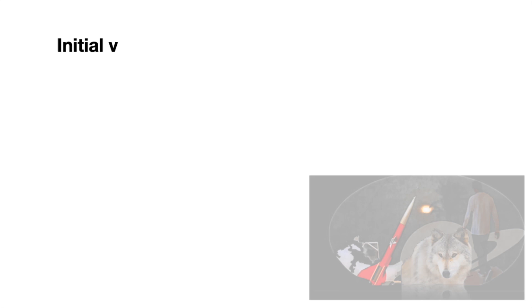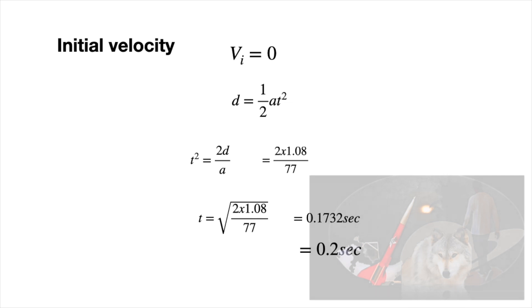V is the initial velocity, which is zero in this case since the rocket started at rest. Since the initial velocity is zero, time zeros out, leaving the equation D equals half of the acceleration multiplied by time squared. Doing a change of subject gives us time squared equals 2D divided by the acceleration. This becomes time equals square root of 2D divided by the acceleration. Substituting in our values, we have T equals square root of 2 multiplied by 1.08 meters divided by 77 meters per second squared, giving a time value of 0.1732 seconds.